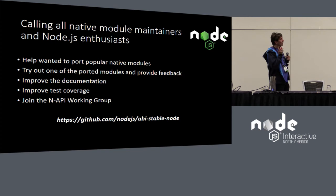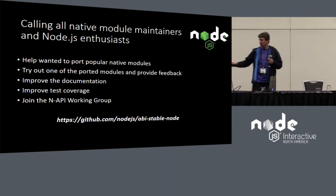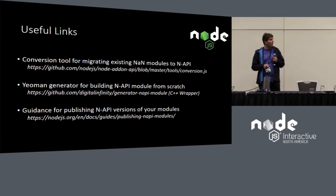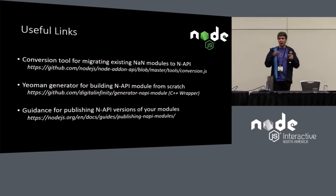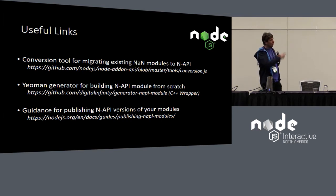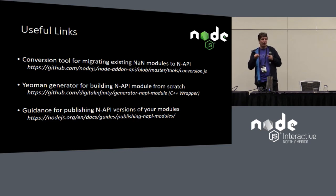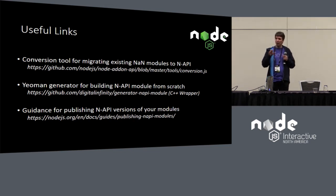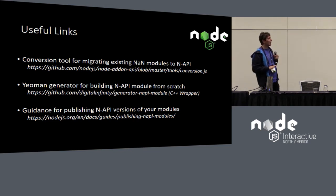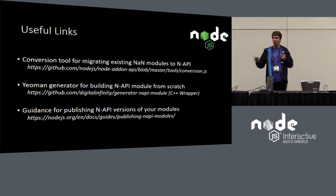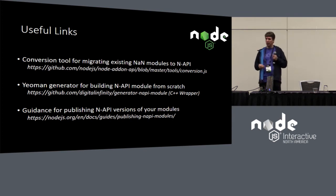Some useful links: if you want to start migrating your existing modules from NAN to NAPI, there's a link to the conversion tool, which is part of the node-addon-api NPM module. Install that and you have the conversion tool — the GitHub readme tells you how to use it. It's a good start, and if you find it's not doing some things it could, give us feedback or submit PRs to help make it better.